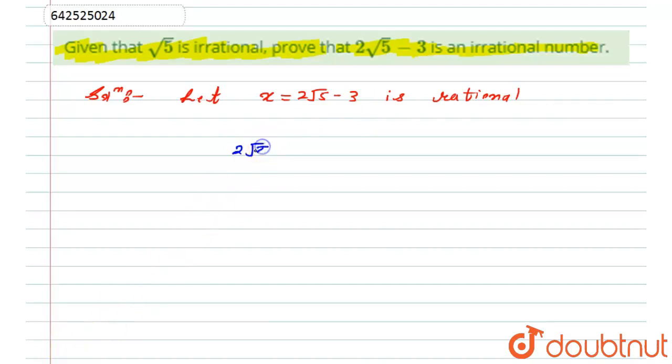Now I will take this 2 to that side, so this will become √5 equals (x + 3) divided by 2.